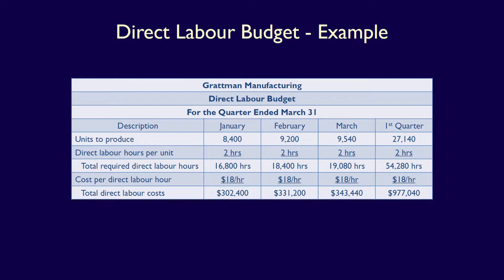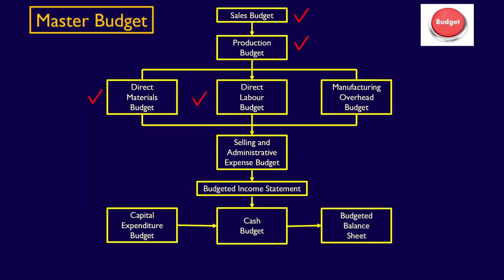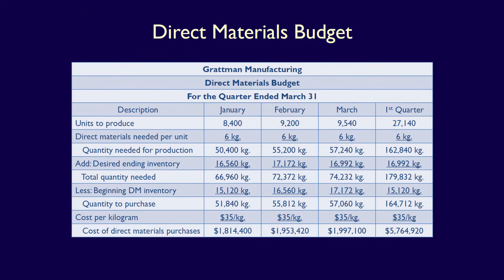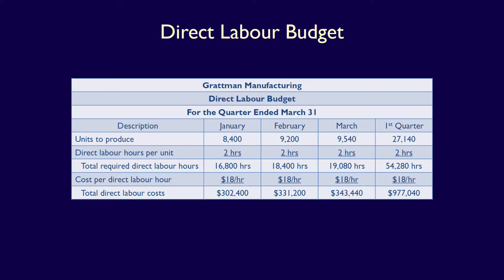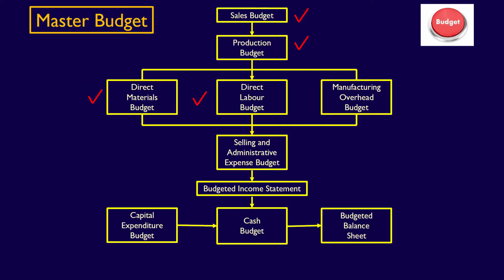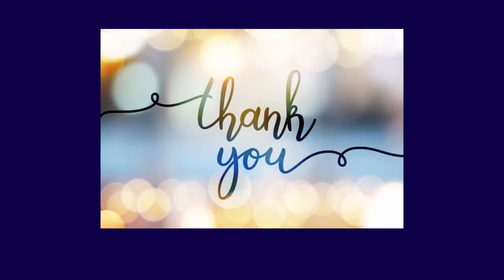We have now completed the direct labour budget. This is the fourth operating budget in the master budget process and it's the second operating budget needed to calculate the cost per unit. All of these budgets — the sales budget, the production budget, the direct materials budget, and the direct labour budget — are required parts of the master budgeting process for a manufacturing firm. In our next video, we'll continue with the next operating budget: the manufacturing overhead budget. Thank you for continuing to watch.